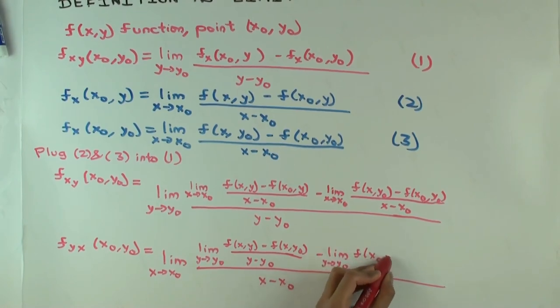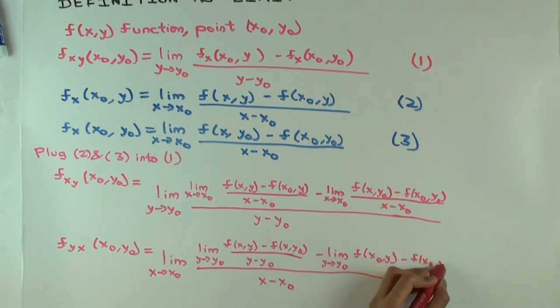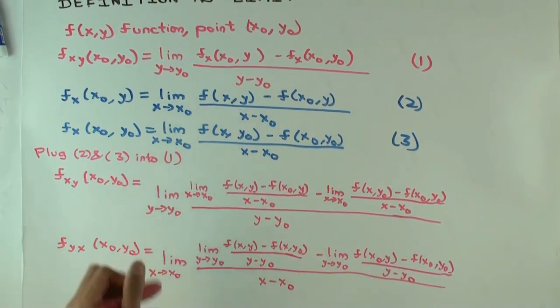f of (x0, y) minus f of (x0, y0) over y minus y0. So these are the two limit expressions. Now repeat your question.